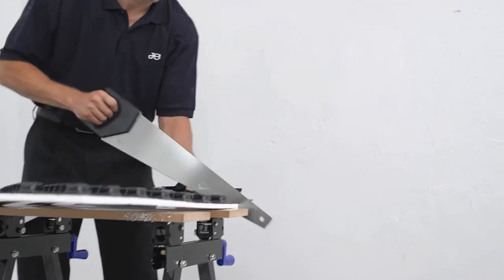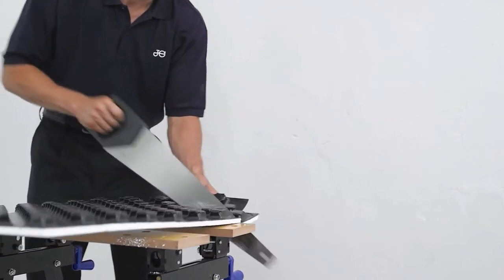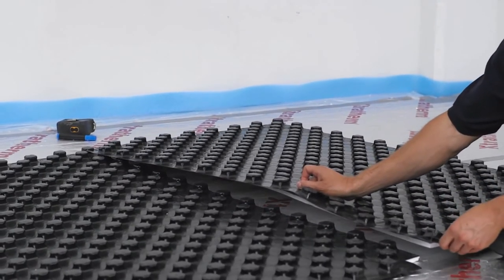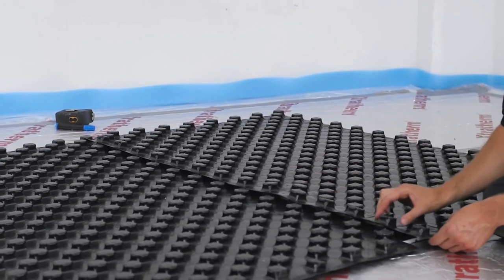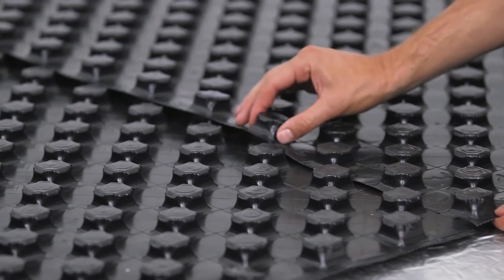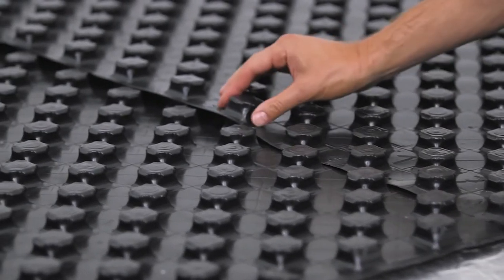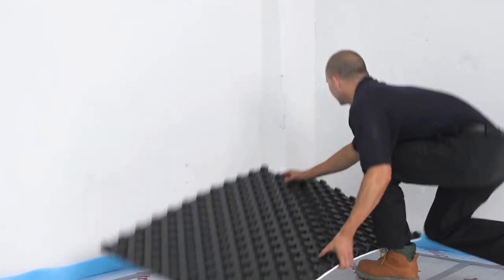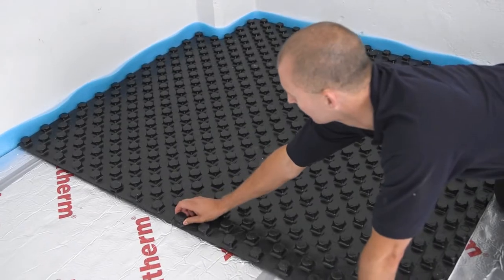The panels can be cut to size using a jigsaw or handsaw. The plates are joined by lapping the castellations over each other and pressing firmly to give a secure joint. It's intended to be laid directly onto the insulation of the prepared floor starting in the corner. Work outwards lapping the panels in rows until the room is covered.